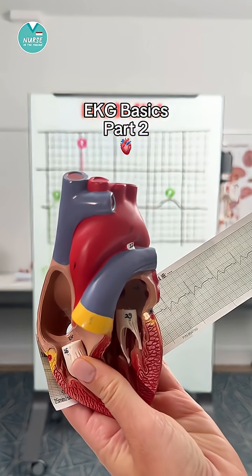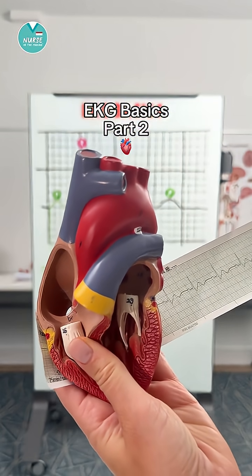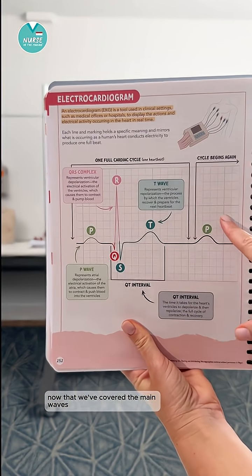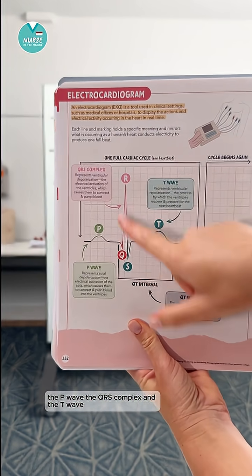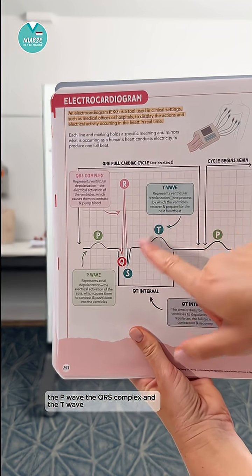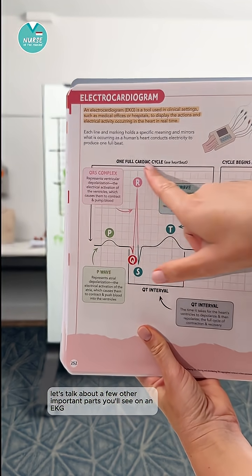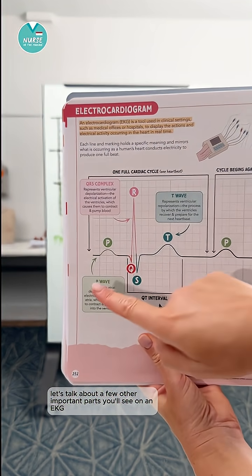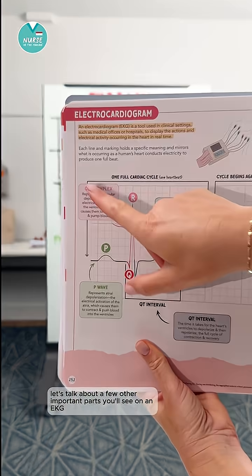Let's go over EKG basics part 2. Now that we've covered the main waves — the P wave, the QRS complex, and the T wave — let's talk about a few other important parts you'll see on an EKG.